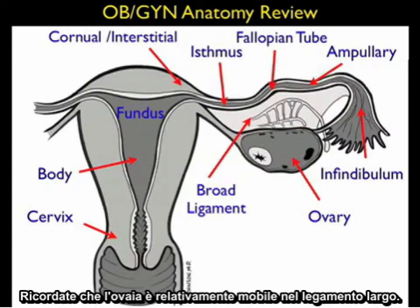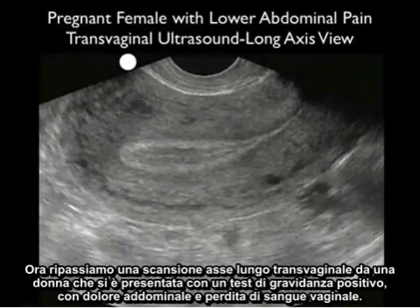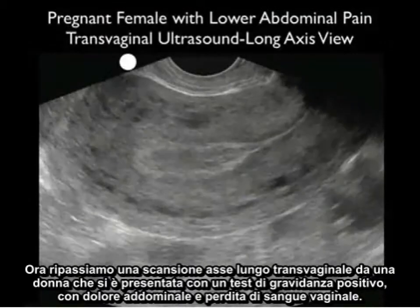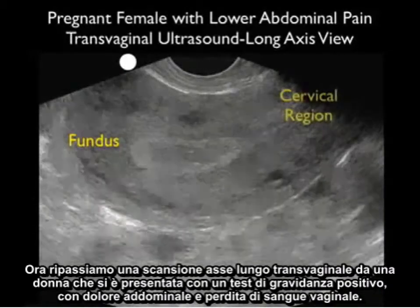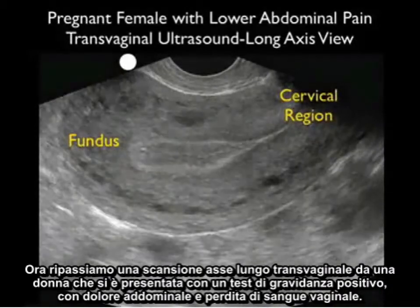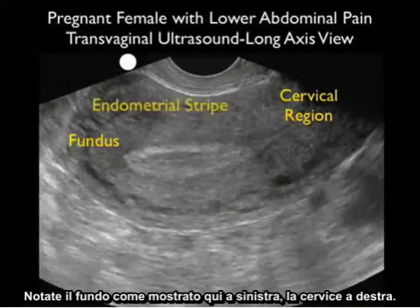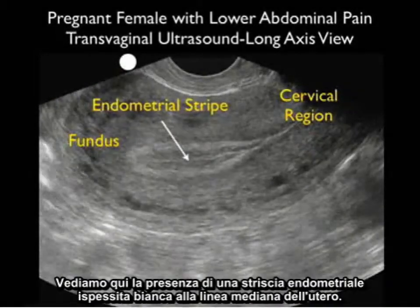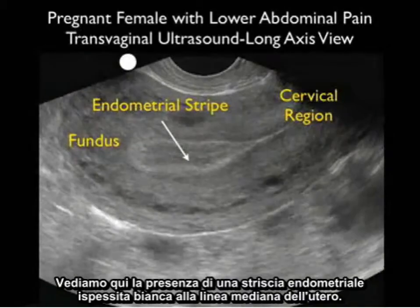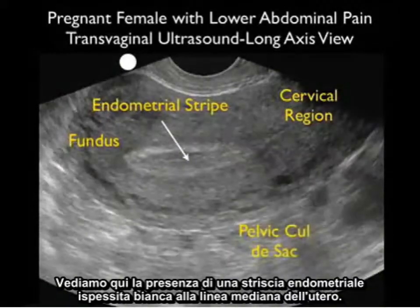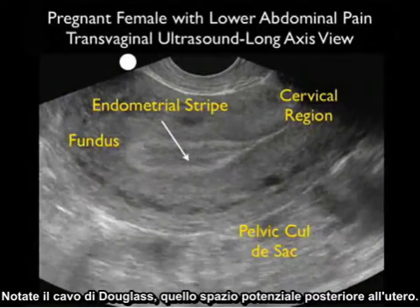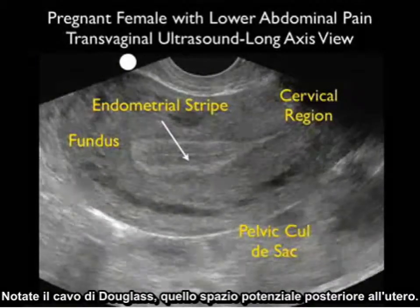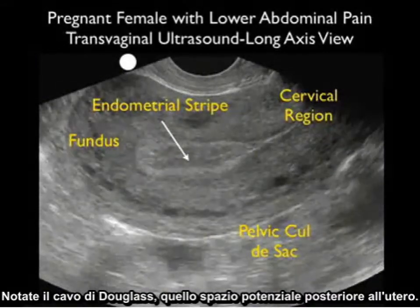Remember that the ovary is relatively mobile within the broad ligament. Now let's review a transvaginal long axis scan from a woman who presented with a positive pregnancy test, lower abdominal pain, and vaginal bleeding. Notice the fundus shown here to the left, the cervix to the right. We see the presence of a thickened white endometrial stripe in the midline of the uterus. Notice the pelvic cul-de-sac, that potential space posterior to the uterus.